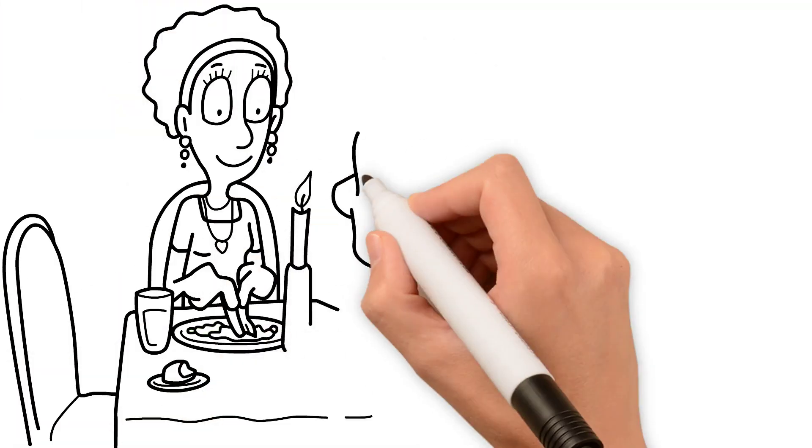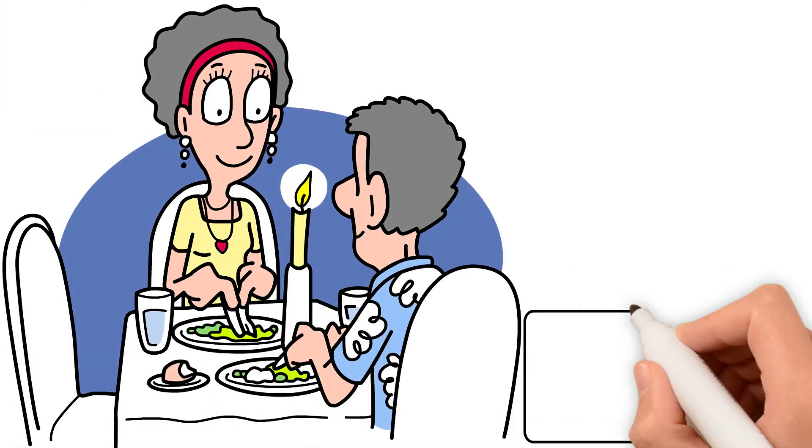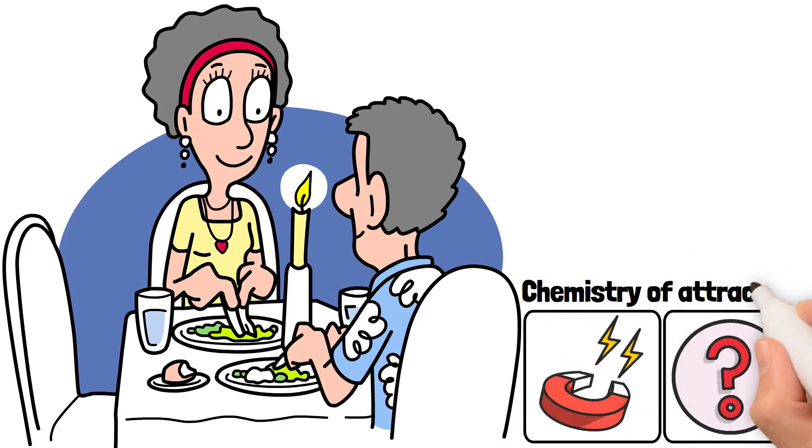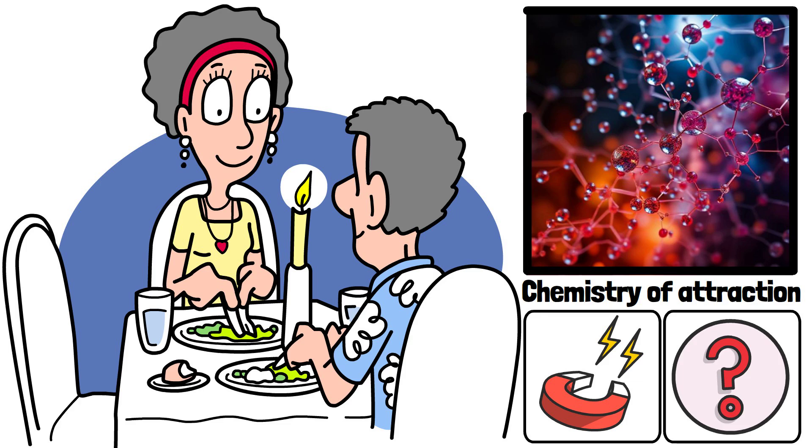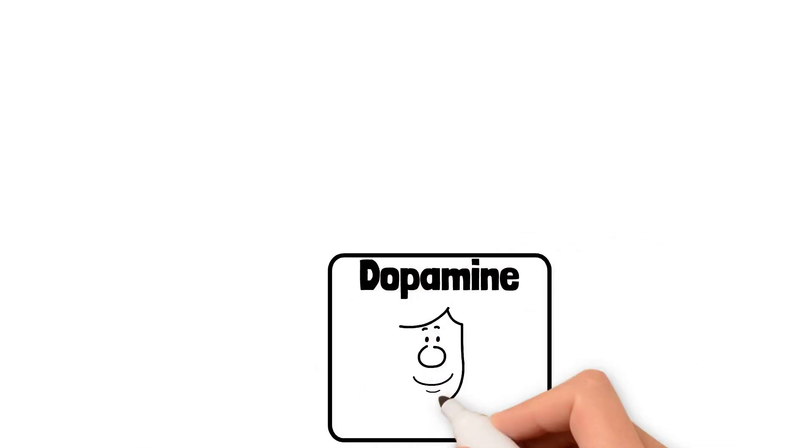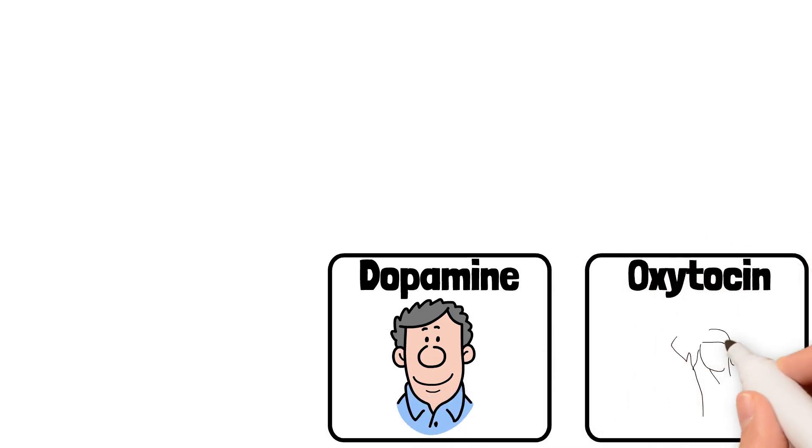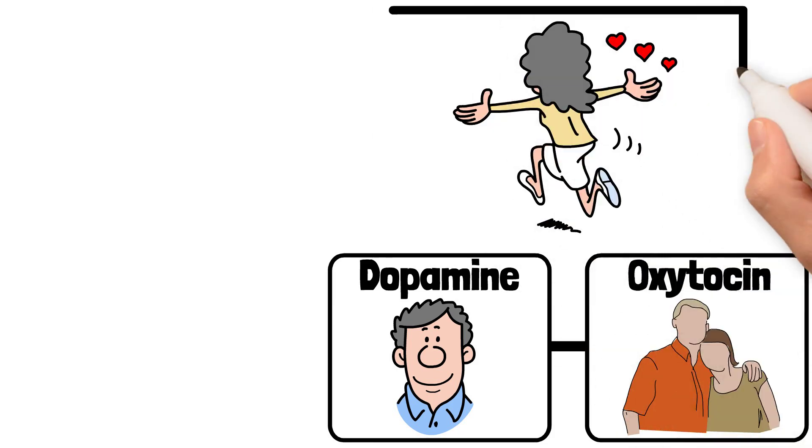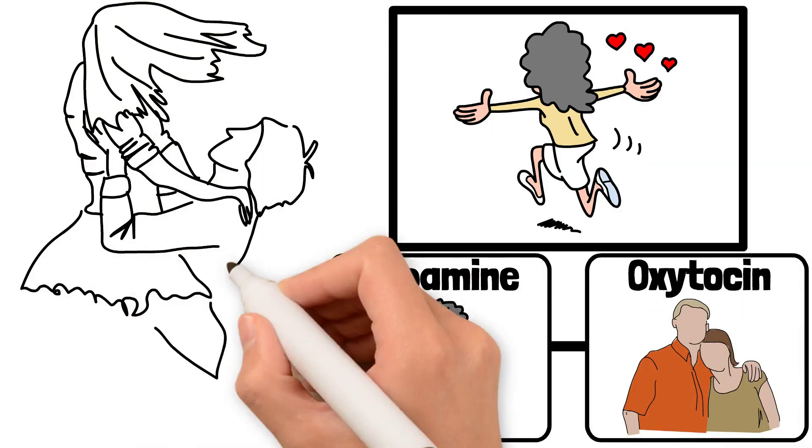When we meet someone we're interested in, the first reaction is often a strong physical attraction. But what happens in our body? The chemistry of attraction is driven by a mix of hormones and neurotransmitters, such as dopamine, which makes us feel happy and excited, and oxytocin, the bonding hormone. This combination makes us feel warmed and connected to someone, as if they are something special.